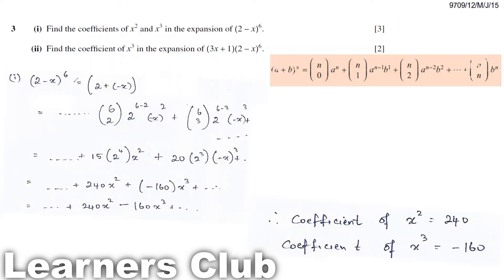The second part of the question says: Find the coefficient of x cubed in the expansion of (3x plus 1) times (2 minus x) to the power 6. Which means you need to find the coefficient of x cubed when you multiply both these terms.